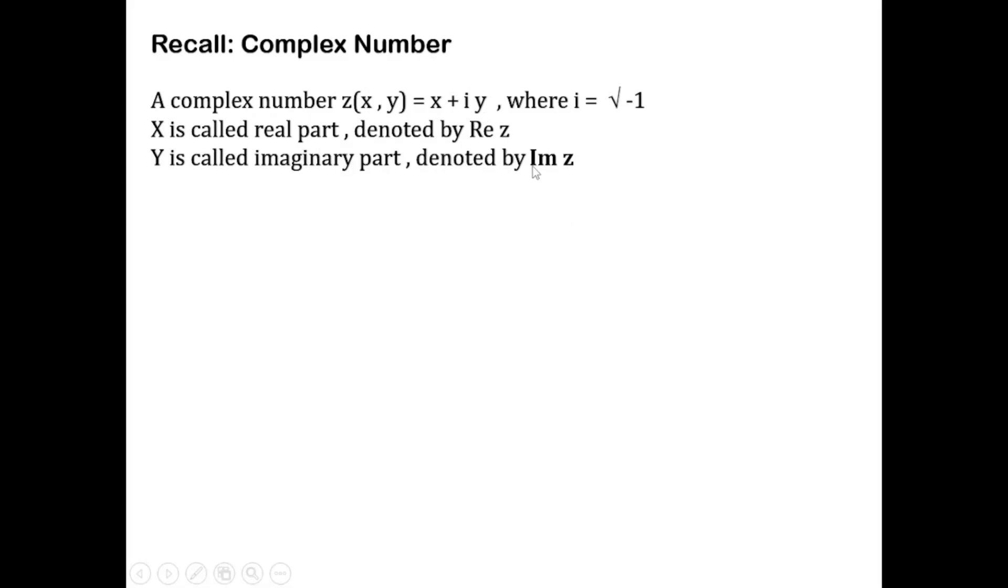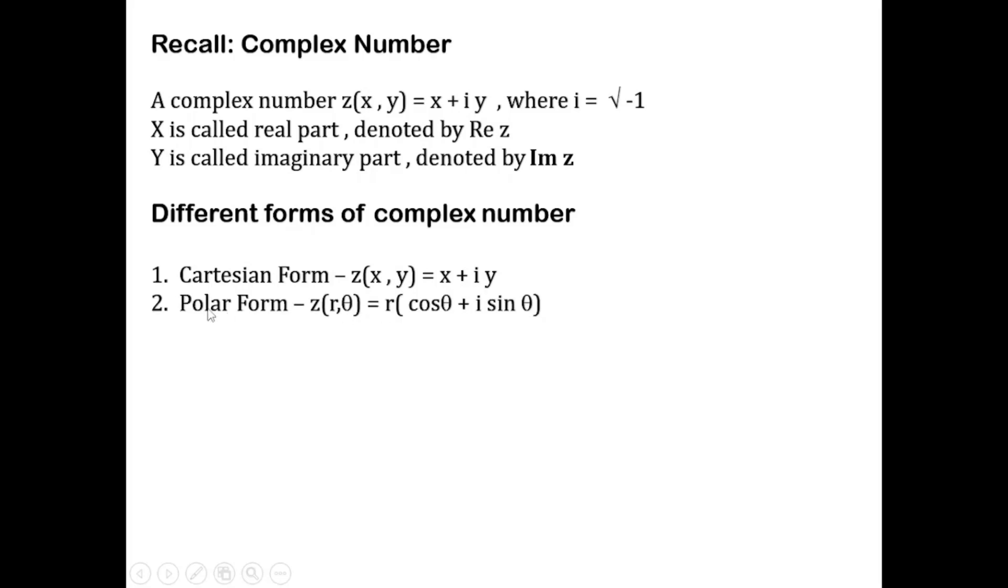Following are different forms of the complex number. Namely, Cartesian form: z = x + iy. Polar form: z = r(cos θ + i sin θ). And Euler's form: z = r e^(iθ), where in the second and third forms, r denotes the magnitude of the complex number given by √(x² + y²).